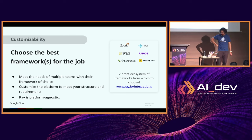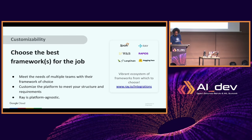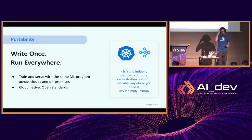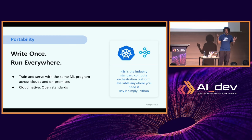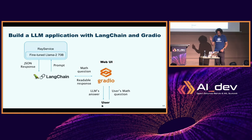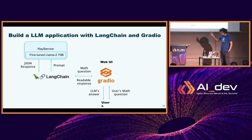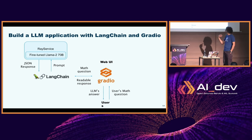Ray integrates with quite a lot of tools - it integrates with LangChain, HuggingFace, and there is a webpage at ray.io/integrations if you're curious about all possible integrations. By using Ray on top of Kubernetes, you can more or less achieve write-once-run-anywhere, because the Ray operator was designed to run on any Kubernetes-compatible API. We have an example - I'll share the GitHub repository later - where we use Ray to serve a fine-tuned LLaMA 2 model on top of Kubernetes and then use Gradio as a chat interface. There is a full example with Terraform to deploy a Kubernetes cluster, deploy Ray, run the model, deploy Gradio, and chat with it.